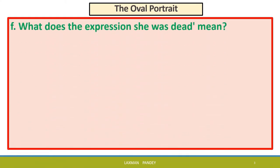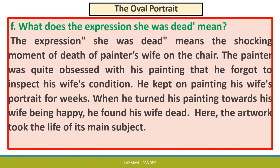What does the expression 'she was dead' mean? The expression 'she was dead' means the shocking moment of the death of the painter's wife on the chair. The painter was quite obsessed with his painting and forgot to inspect his wife's condition. He kept on painting his wife's portrait for weeks. When he turned his painting towards his wife being happy, he found his wife dead. Here, the artwork took the life of its main subject.